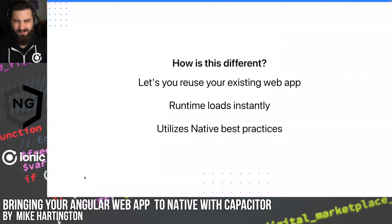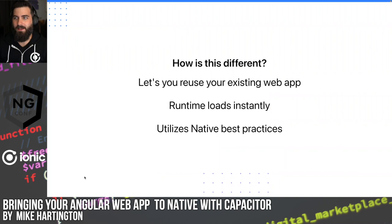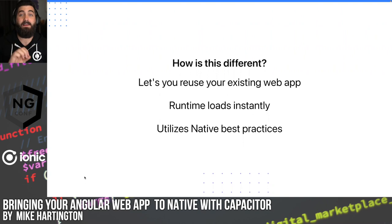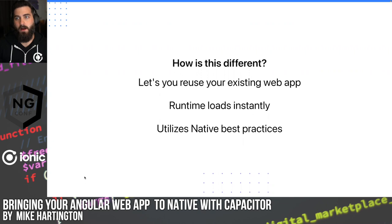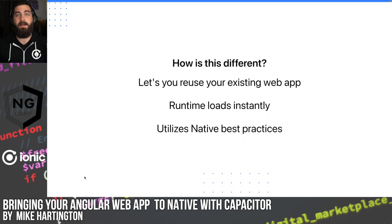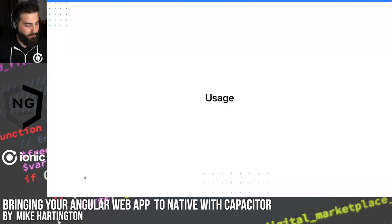How is Capacitor different from other solutions? First and foremost, it lets you take your existing web app and load it into a native context. The runtime and APIs are available immediately, so if you need fast system calls or want to initialize native crash analytics, you can do that in native code. Because we're using native best practices and native tooling, migrating between major versions is straightforward — just open your native IDEs, perform the needed updates, and you're good.